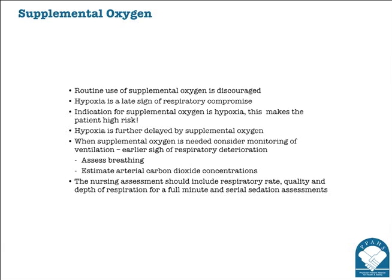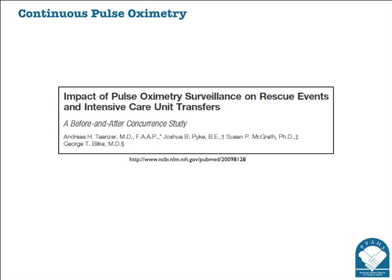Some facilities have looked carefully at the issue of using pulse oximetry on all patients receiving opioids. Is that a strategy sufficient to detect respiratory depression? It can be a good strategy. Studies have shown that continuous pulse oximetry, as part of a comprehensive monitoring program that includes monitoring of vital signs and nurse monitoring of sedation, has decreased the rate of unexpected transfers to the ICU or decreased the need for rescue medications. But it's important to keep in mind that those benefits are part of a comprehensive strategy — and it must be continuous, not intermittent, pulse oximetry.